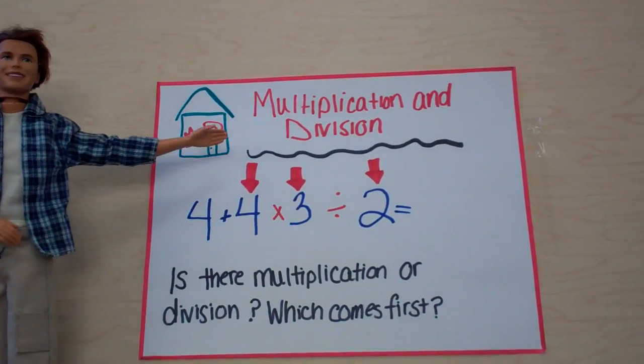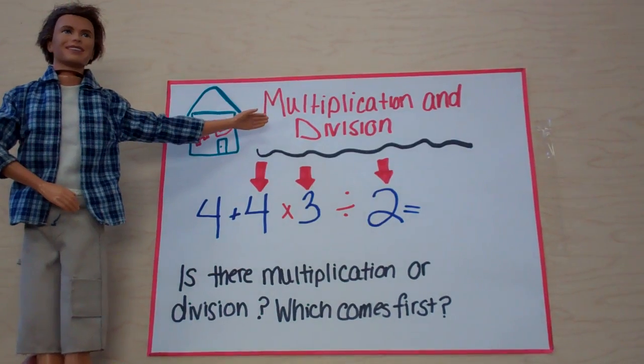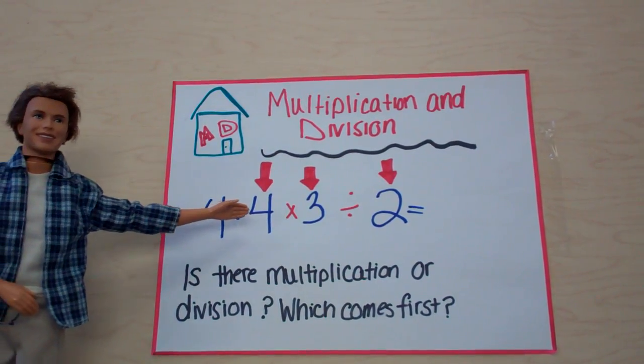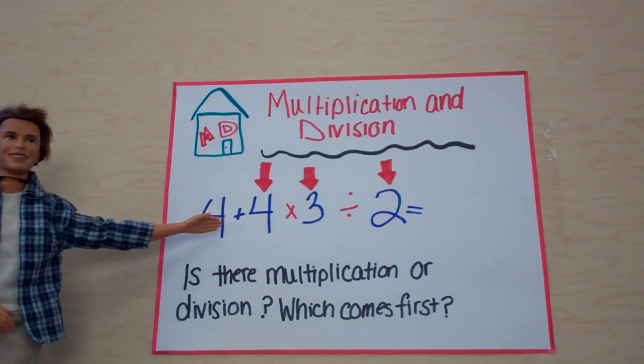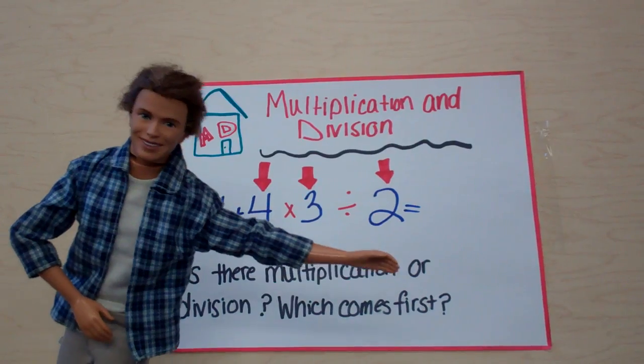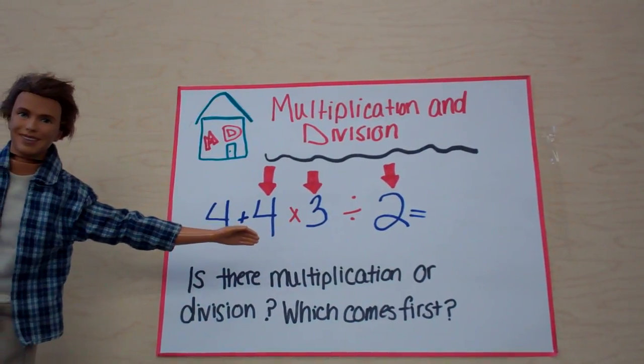M is for multiplication and D is for division. Is there multiplication or division? Which comes first? I see multiplication. That's right, Don.